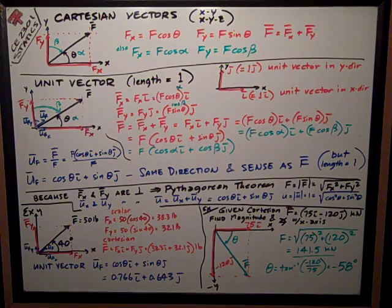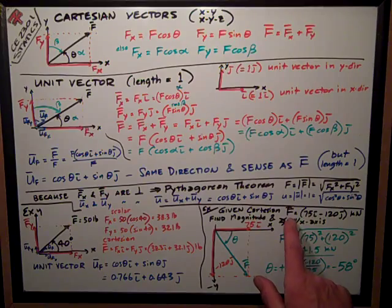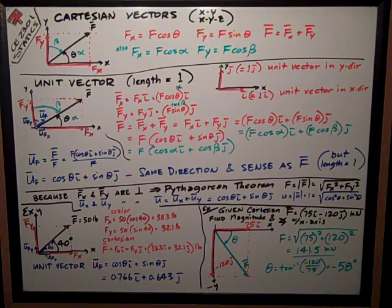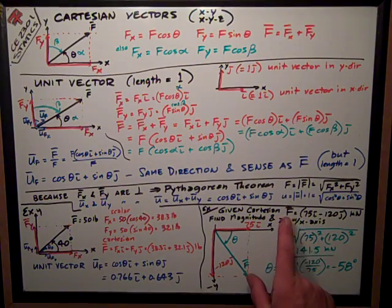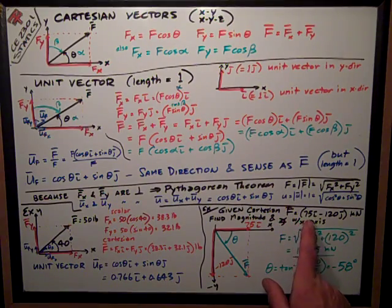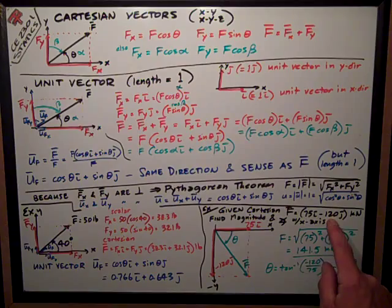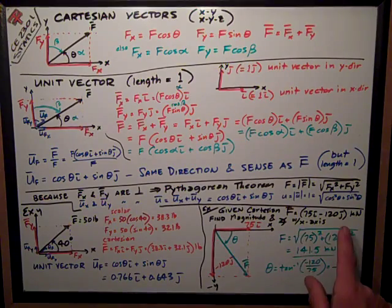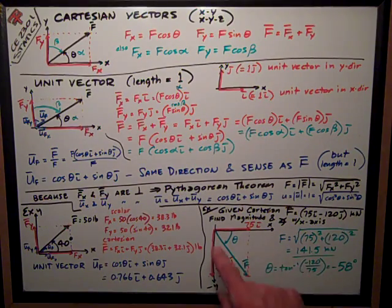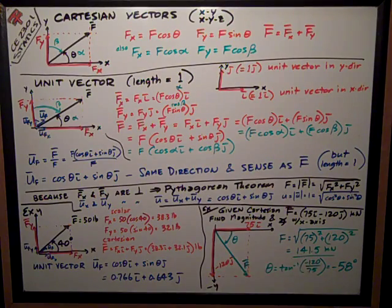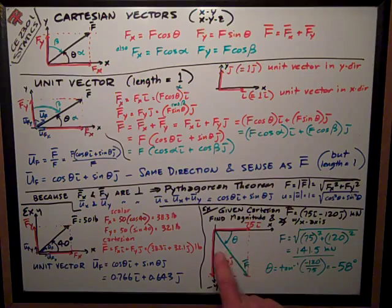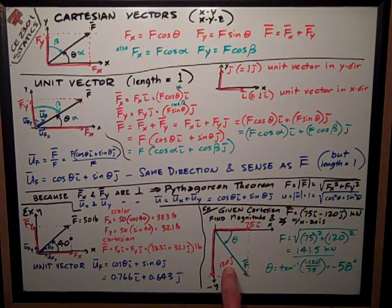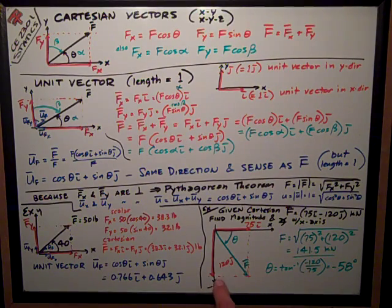Another way we're going to present problems to you is we're going to give you the Cartesian components and we're going to want to know what the magnitude and the angle it makes with the x-axis. In this case I'm given that the Cartesian vector is 75i minus 120j. That means it's 75 positive in the x-direction and 120j in the y-direction, so it's negative, pointing down. I've drawn it graphically like this with my x and y-axes.